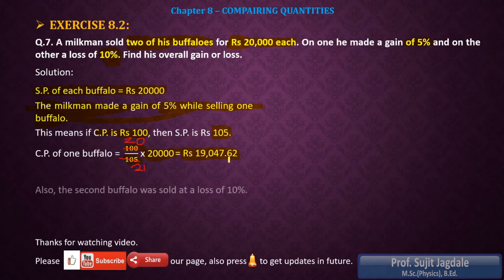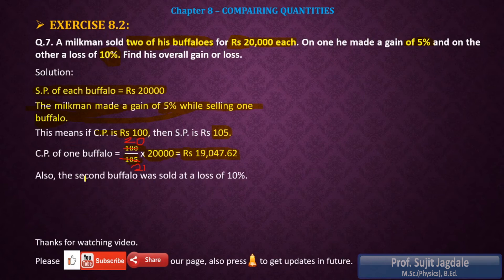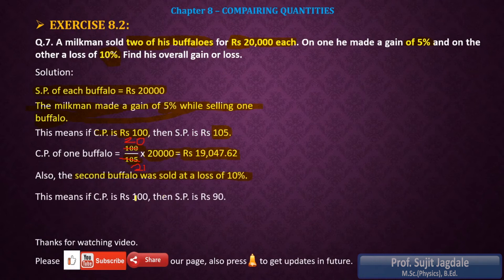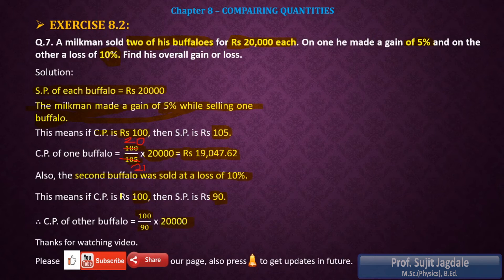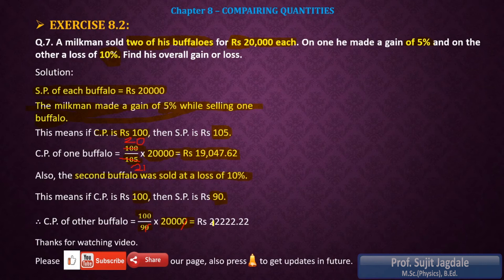Now for the second buffalo, the milkman had a loss of 10%. Loss means we subtract, so if CP is 100, then SP is 90. Therefore, CP of the second buffalo = (100/90) × 20,000 = 2,00,000 ÷ 9, which gives Rs 22,222.22.